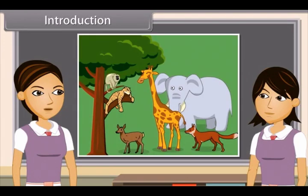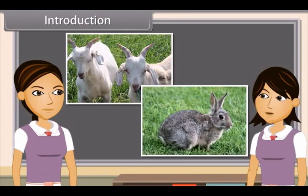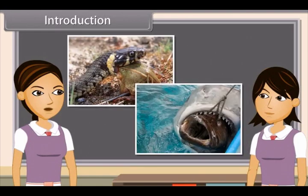There is a wide variety of animals on the basis of their type of food. Many animals eat only plants like grasses and leaves, while some of them eat other animals. The big fish eat small fish, the birds eat worms and insects, snakes eat frogs, and some insects eat dead bodies of animals.